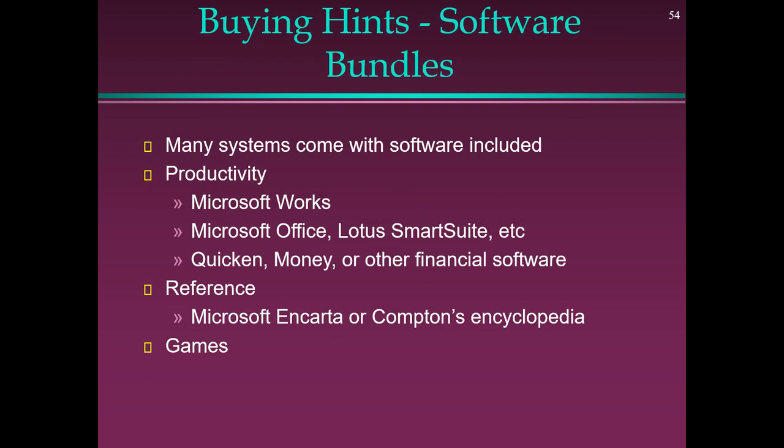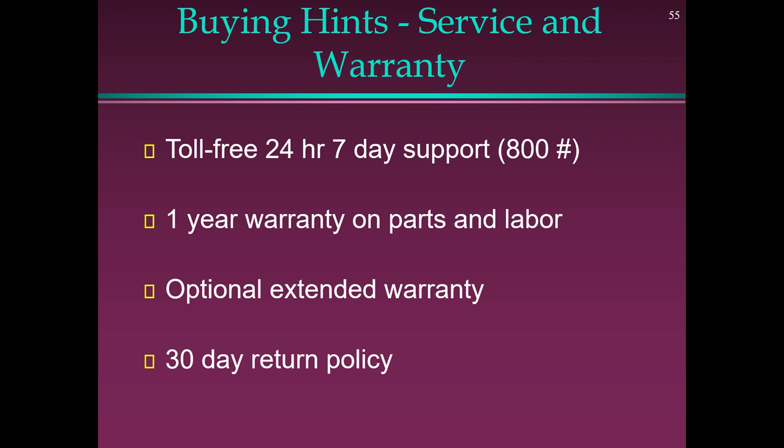Software Bundles: Many systems come with software included — productivity suites such as Microsoft Works, Microsoft Office, Lotus SmartSuite; financial software like Quicken or Money; reference software like Microsoft Encarta or Compton Encyclopedia; and Games. Service and Warranty: Look for toll-free 24-hour, 7-day support, a 1-year warranty on parts and labor, an optional extended warranty, and a 30-day return policy.